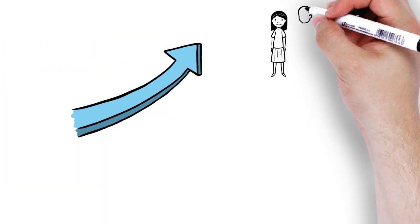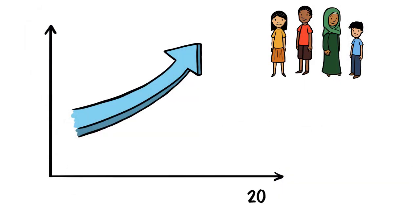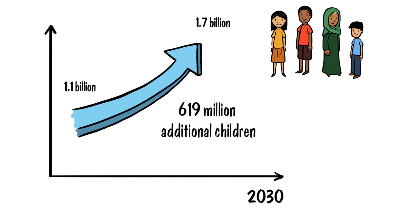The population of school-aged children is increasing fast. Globally, by 2030, 619 million more children will need to go to school to achieve basic education for all.